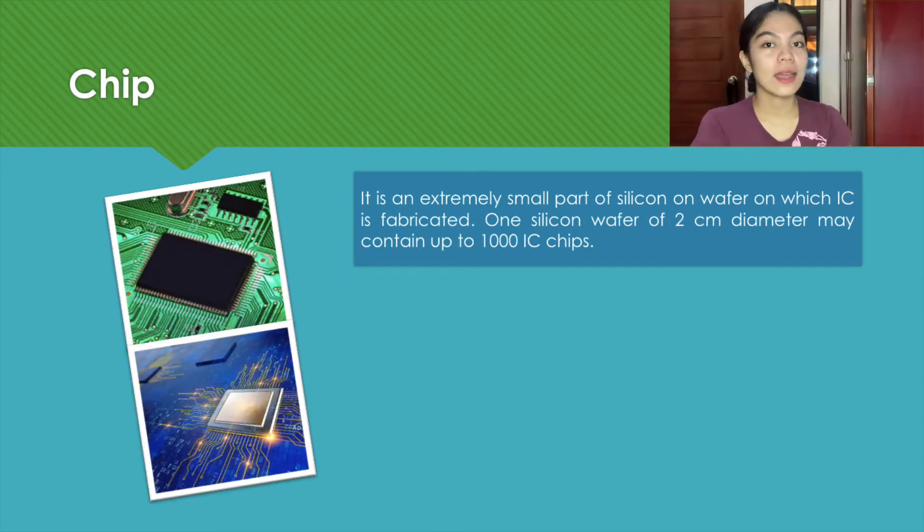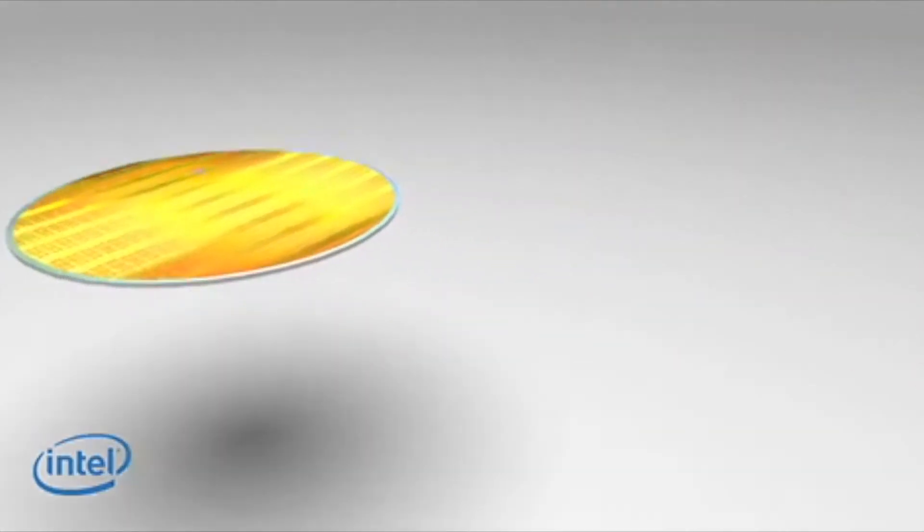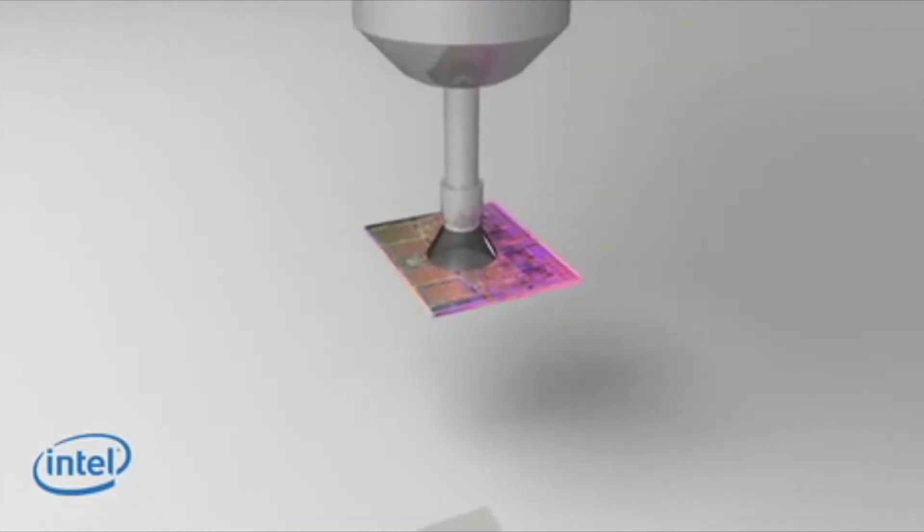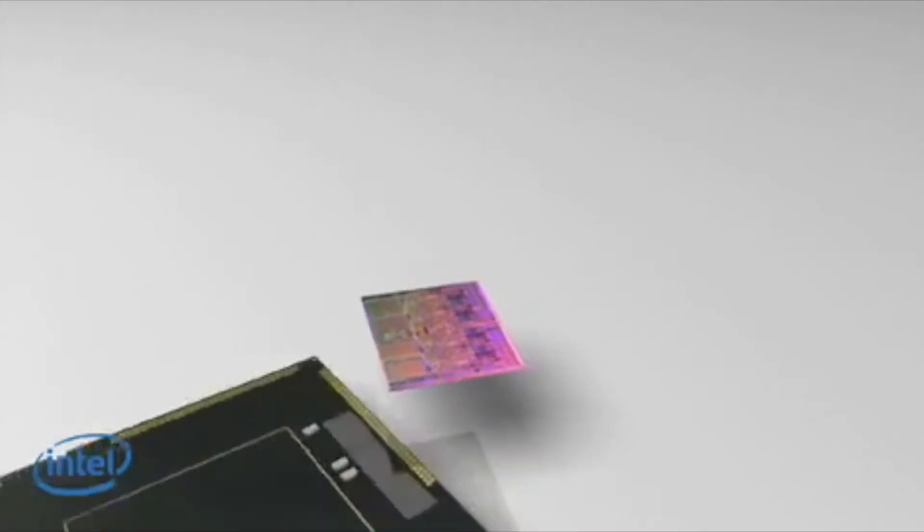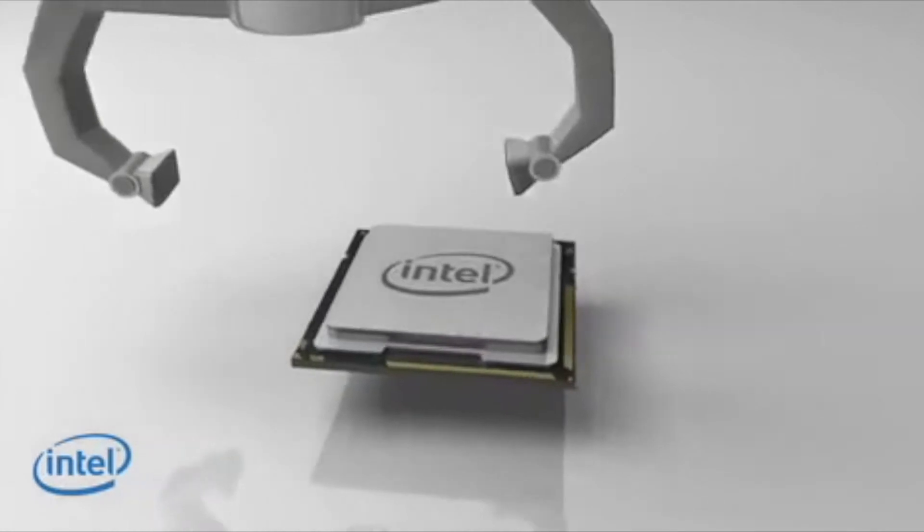The third term is a chip. A chip is an extremely small part of silicon and wafer on which an IC is fabricated. Furthermore, chips are the heart and brains of most circuits. They are the ubiquitous small black chips you find on just about every circuit board.